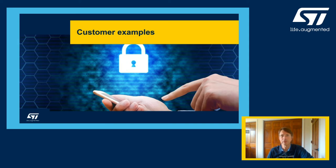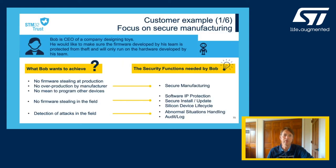Let's review six of the most common use cases and how the STM32 Trust can address them. In our first example, we focus on secure manufacturing. Bob is CEO of a company designing toys. He'd like to make sure the firmware developed by his team is protected from theft and will only run on the hardware developed by his team. Bob needs to secure the first installation of his firmware in an untrusted environment, protect and update his firmware in the field, and detect and log possible attacks on his toys.